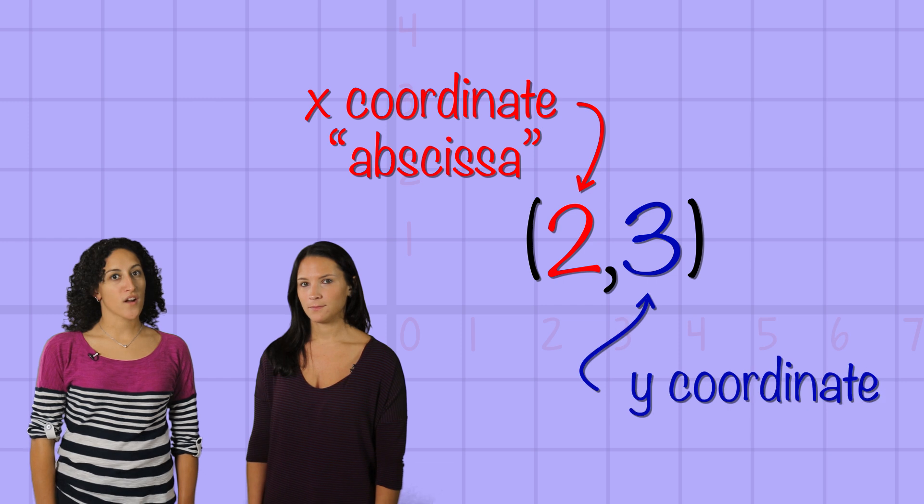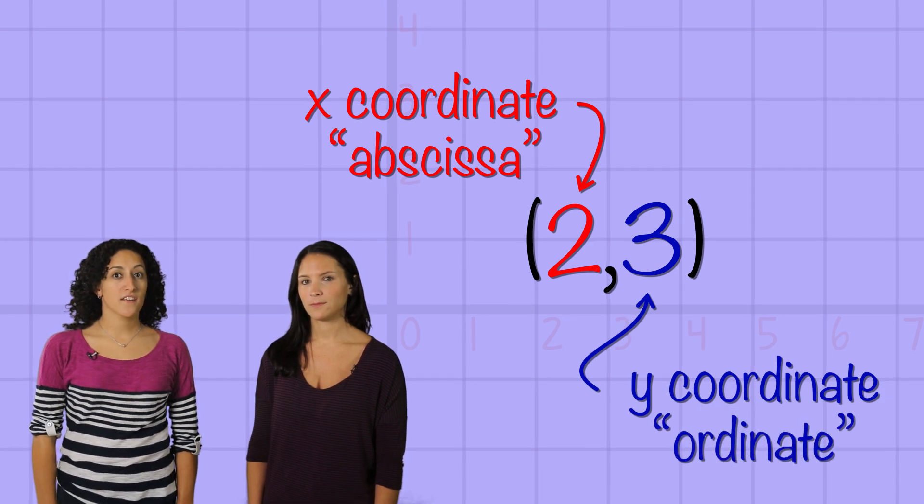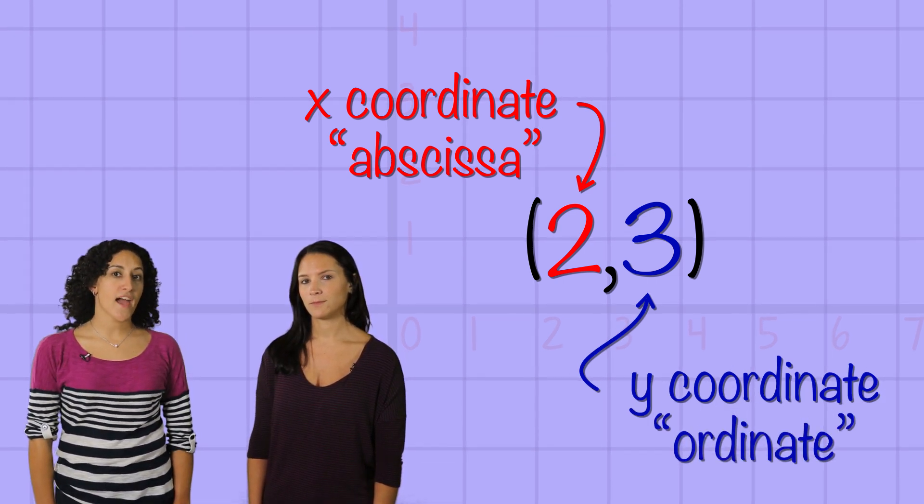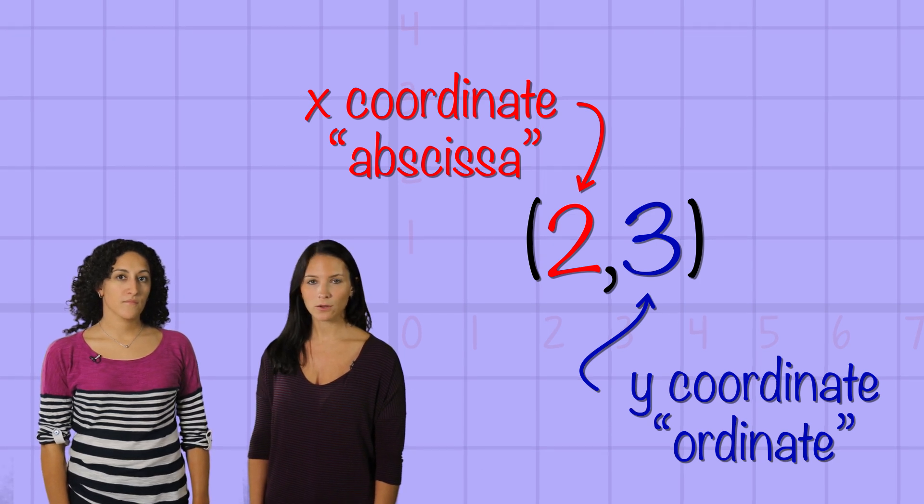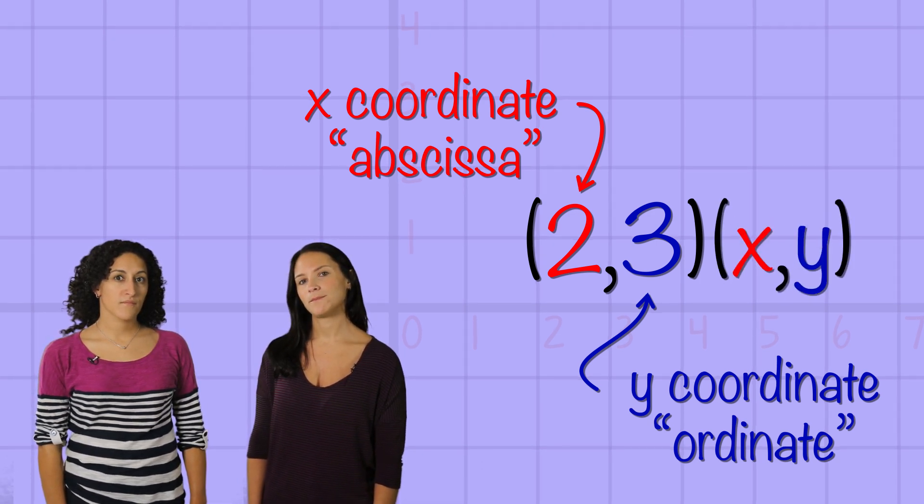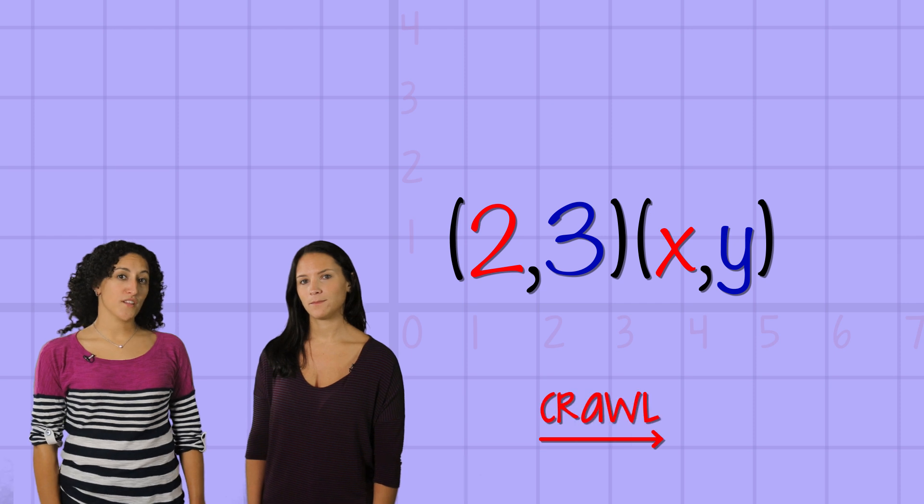The second number is the y-coordinate. You can call that the ordinate. That gives you your position on the y-axis. If you're ever confused, remember that the letters go in alphabetical order, x then y. And you have to crawl before you climb.